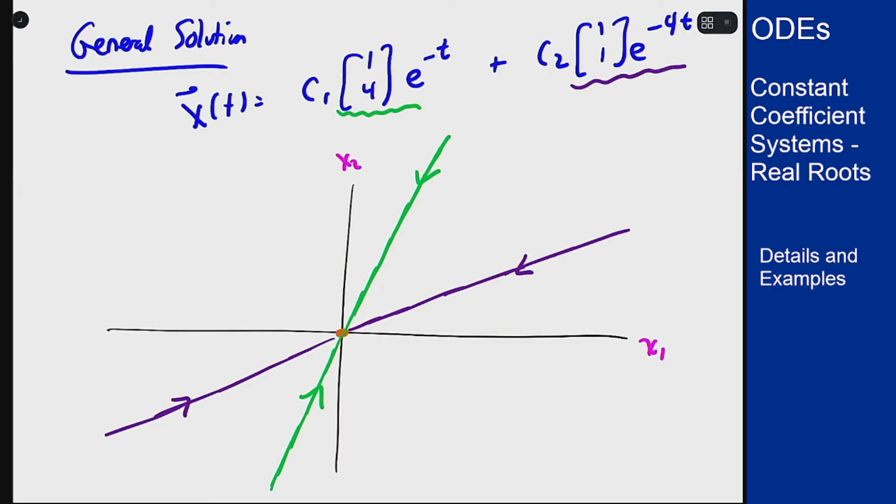Now what happens everywhere else? As an example, let's pick c1 to be 1 and c2 to be 1. We got these green and purple lines because we picked one of those to be zero. Let's pick them both to be 1 and see what happens.